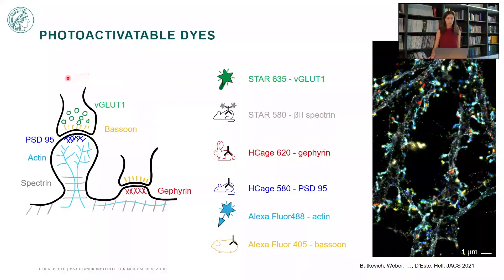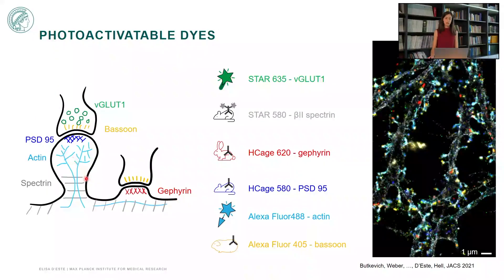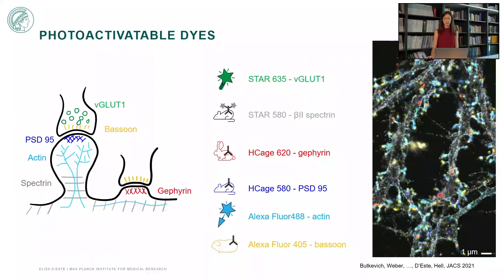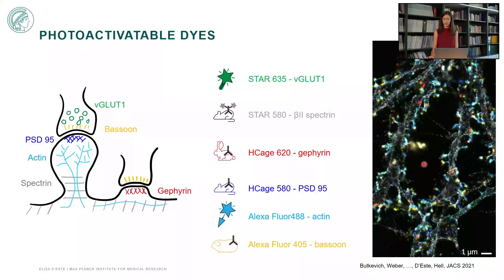In this image we have a presynaptic structure labeled with Bassoon and RIM, labeled with nanobodies and primary-secondary antibodies respectively. Then we have components of the excitatory and inhibitory postsynaptic sites labeled with conventional primary and secondary antibodies. We have actin labeled with phalloidin — a small molecule — and spectrin labeled by pre-coupling of the primary antibody with the secondary nanobody. You can see that we can visualize all six colors in the image with no crosstalk or bleed-through between the clearly separated structures.